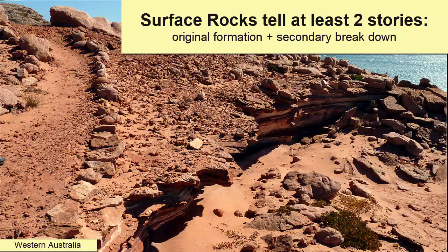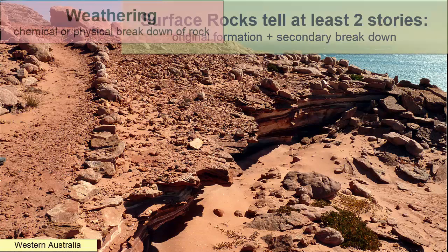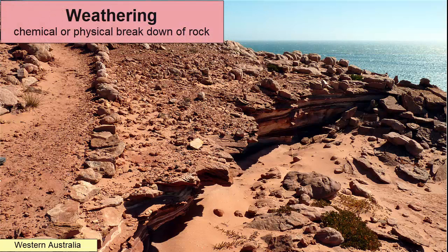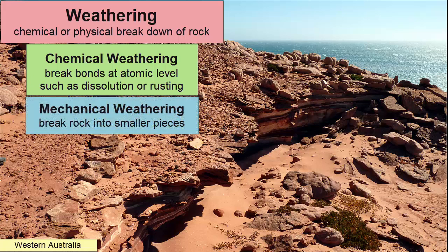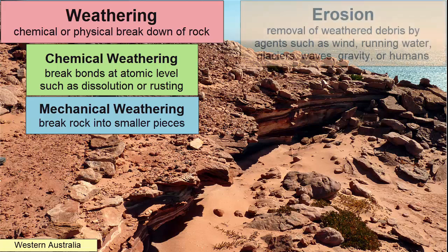When rocks break down chemically or physically at Earth's surface, we call those processes weathering. Chemical weathering breaks down the chemical bonds in the minerals, such as when dissolving a crystal or rusting iron. Physical or mechanical weathering breaks down or cracks the rock into smaller and smaller pieces. When weathered rock material is picked up and removed by agents like wind, running water, glaciers, waves, gravity, or humans, the processes are called erosion.